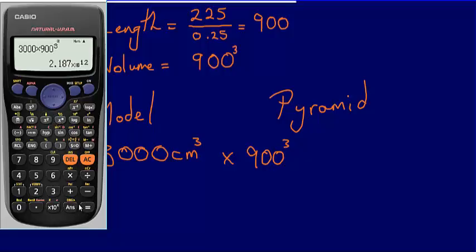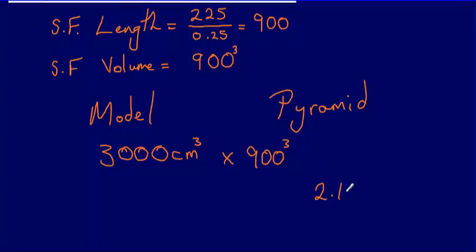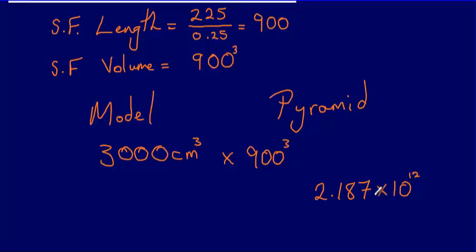That calculation gives me an answer of 2.187 times 10 to the power of 12. So the pyramid's volume would be 2.187 × 10¹² centimetres cubed.